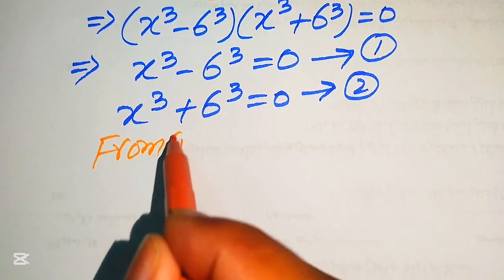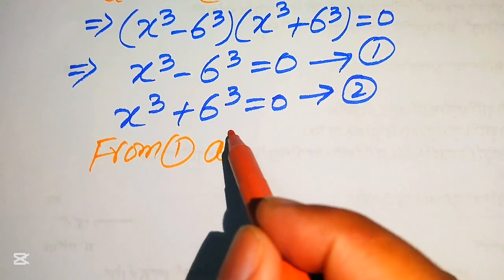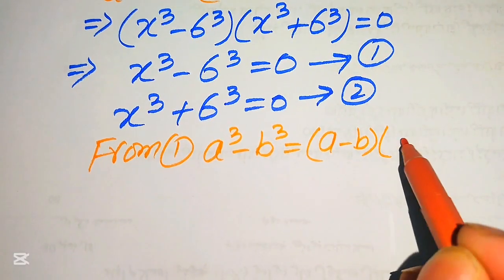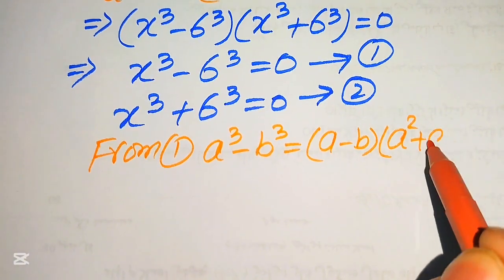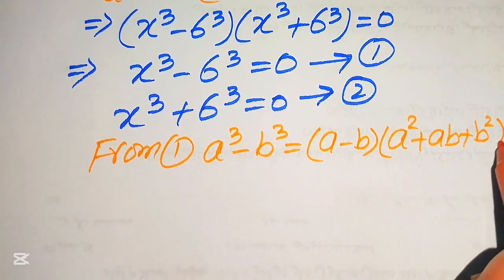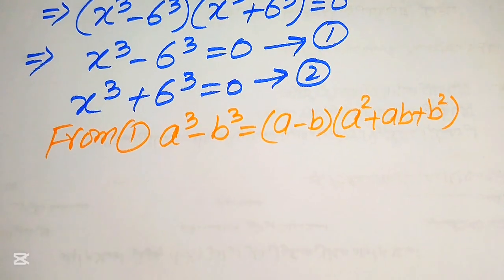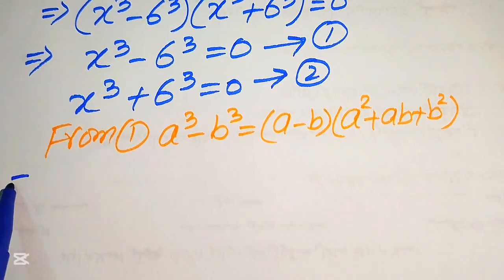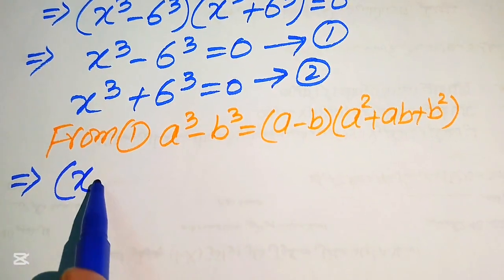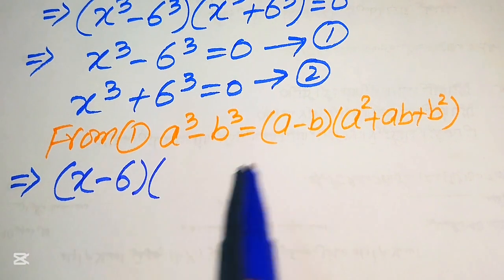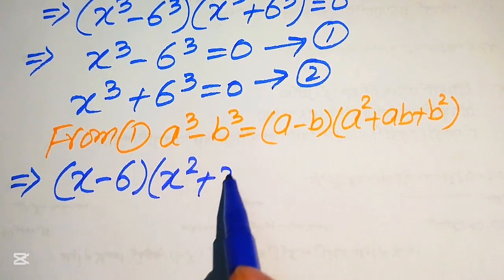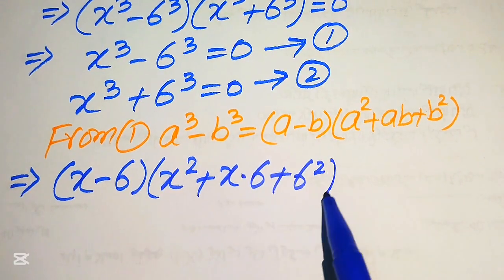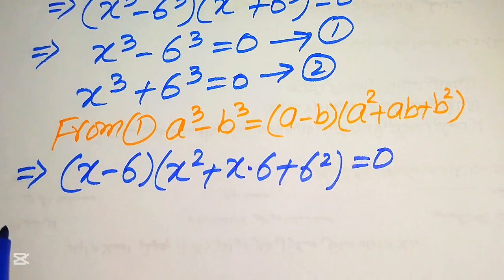For equation 1, we apply the difference of cubes formula: a³ − b³ = (a − b)(a² + ab + b²), where a = x and b = 6. Substituting, we get (x − 6)(x² + 6x + 6²) = 0, which simplifies to (x − 6)(x² + 6x + 36) = 0.